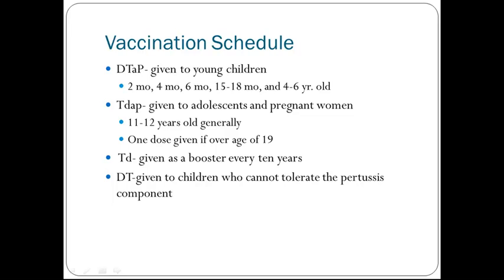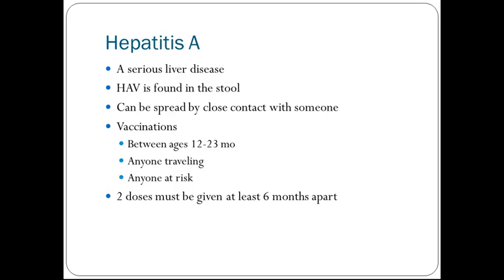Even though Td is given as a booster every 10 years, with recent outbreaks of pertussis, many physicians are moving to doing boosters with DTaP to cover that component and lessen disease in our communities. Hepatitis A is a serious liver disease. HAV is found in the stool and can be spread by close contact. Vaccinations are generally given between the ages of 12 to 23 months; here in Wisconsin, at 12 months and then at 18 months. People at risk or anyone traveling should receive two doses, given at least six months apart.